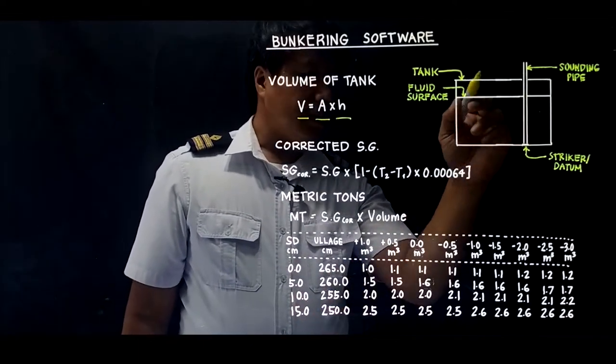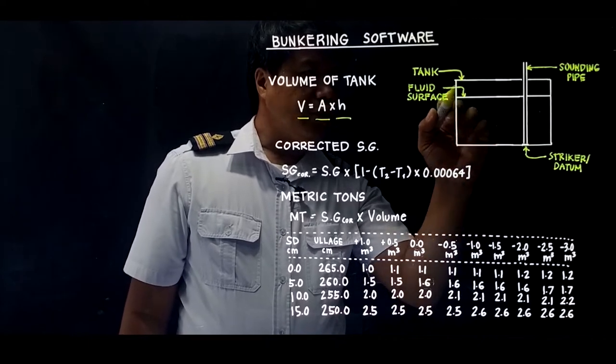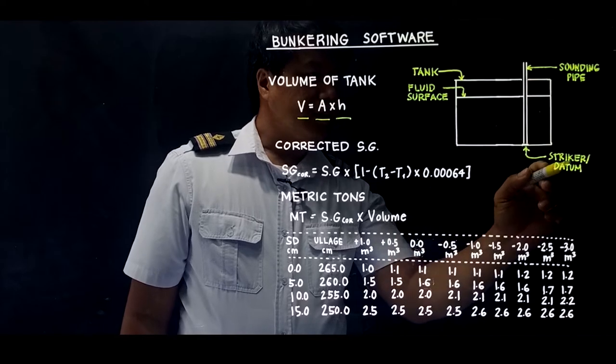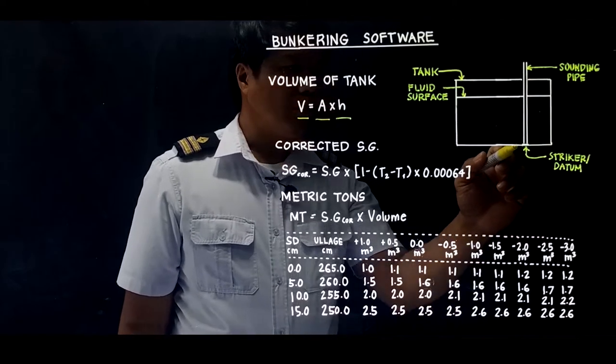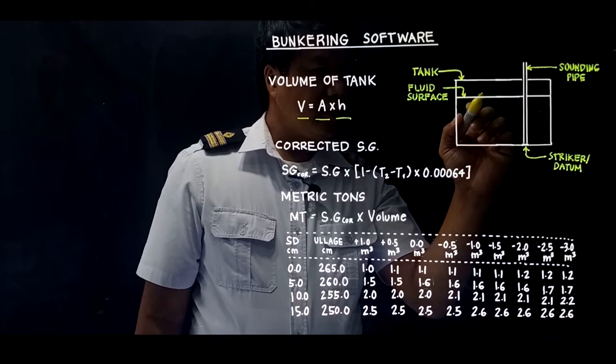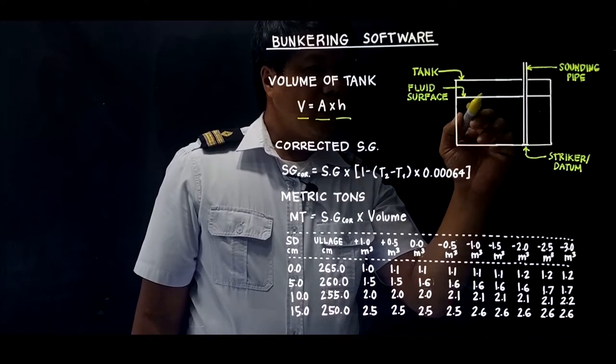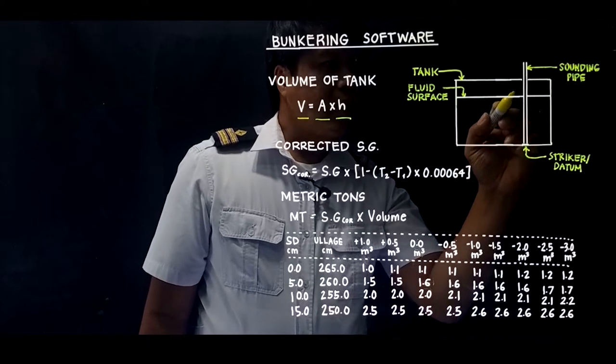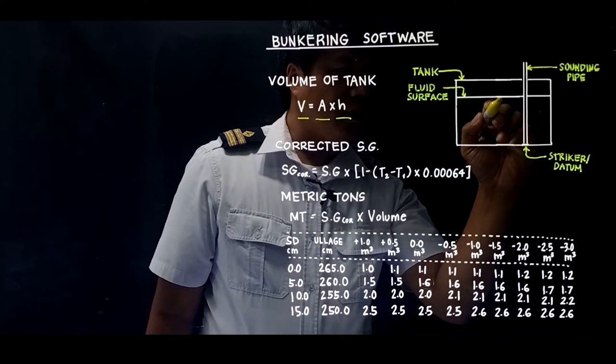If this is the tank, we have the fluid surface and this is the sounding pipe, this is the striker or the datum. The distance or the depth between the fluid surface until the bottom of the tank is called the deep sounding or the sounding.